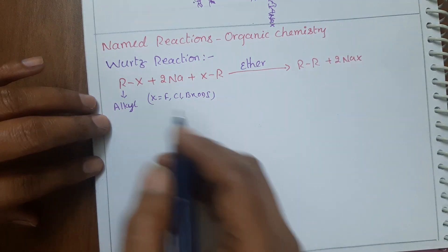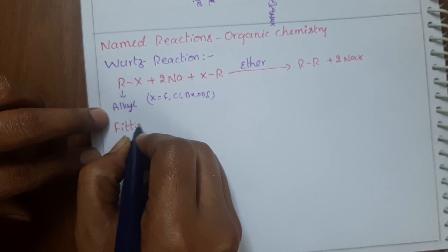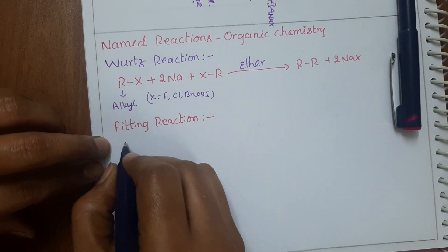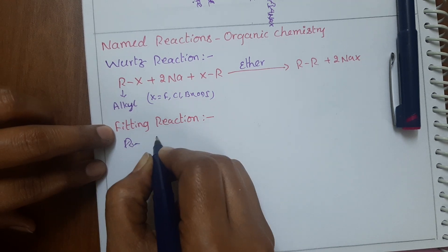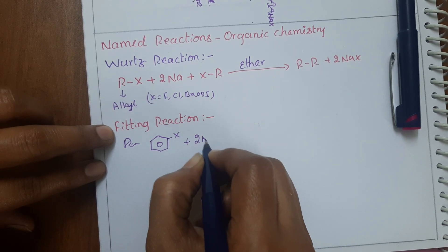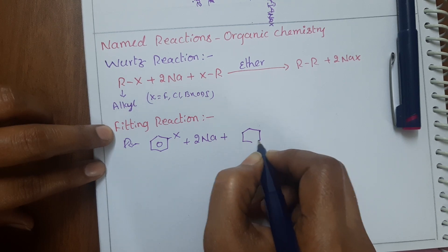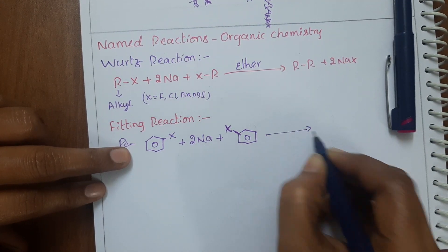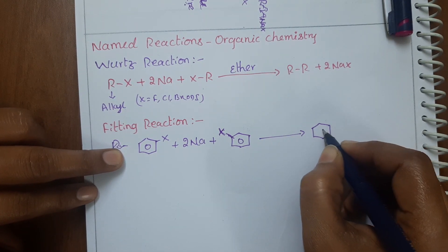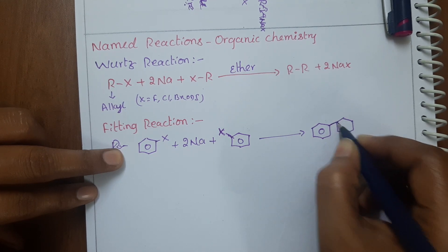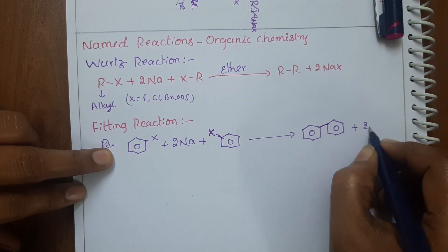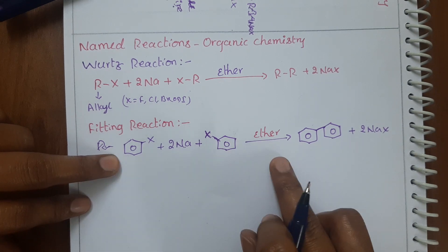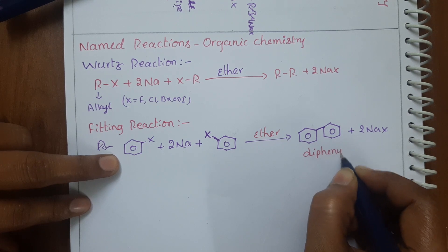After explaining these three reactions I will reveal the trick. Now let us see the Fittig reaction. In the Fittig reaction, two moles of aryl halides react with sodium metal in the presence of dry ether. It will give diphenyl. So in the Wurtz reaction we took two moles of alkyl halides, and in the Fittig reaction we take two moles of aryl halides reacting with sodium metal in ether to give diphenyl.